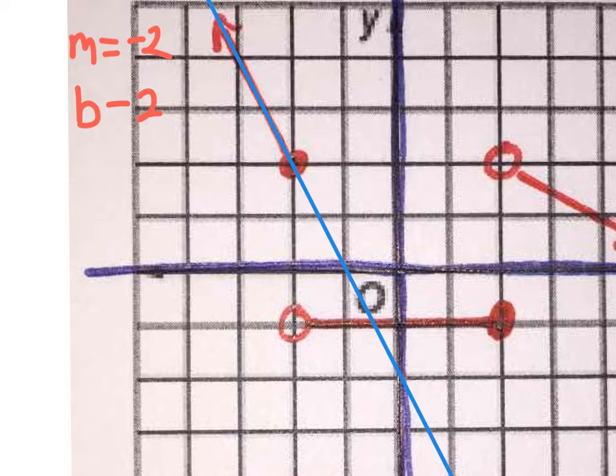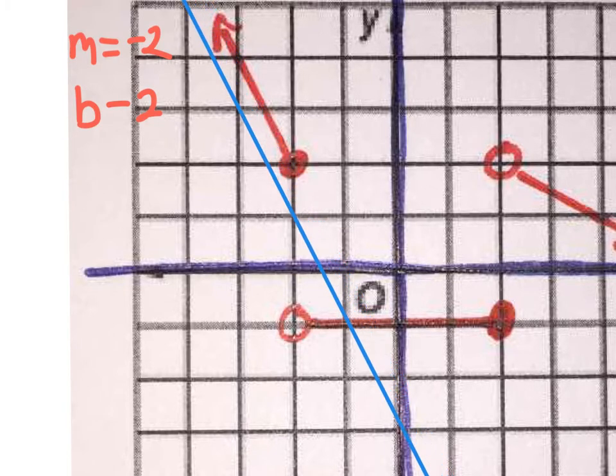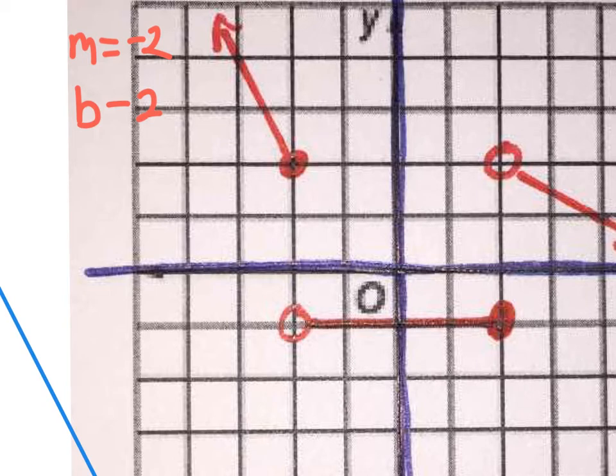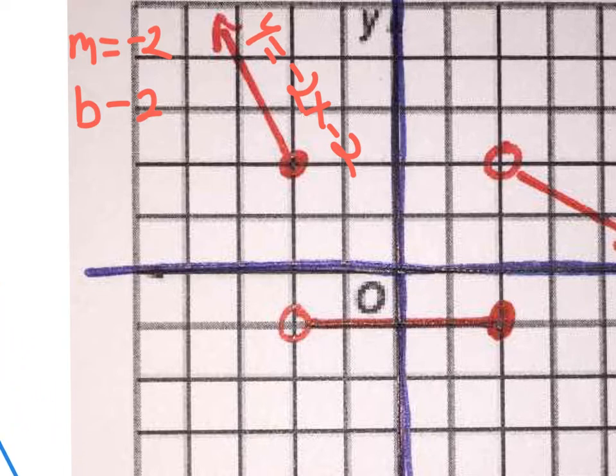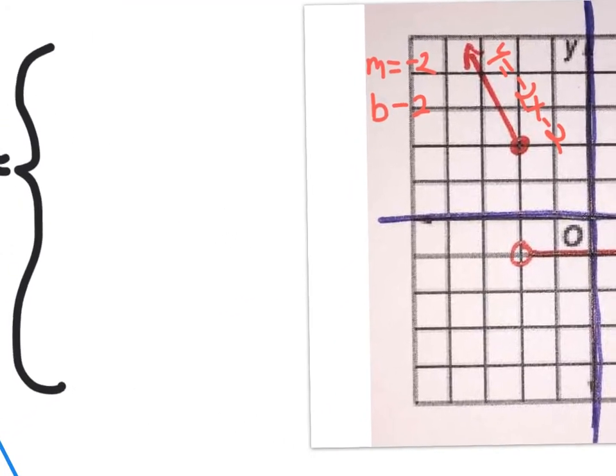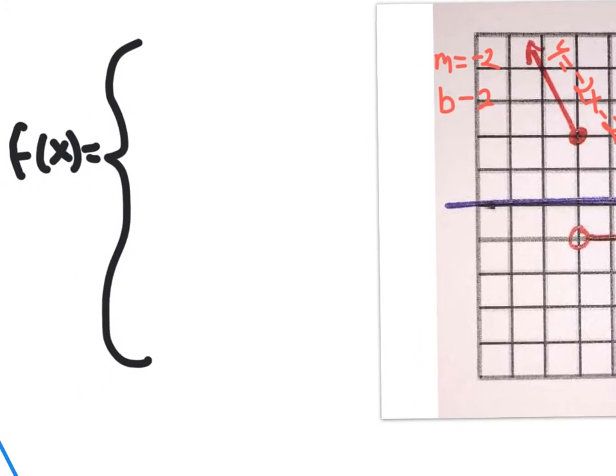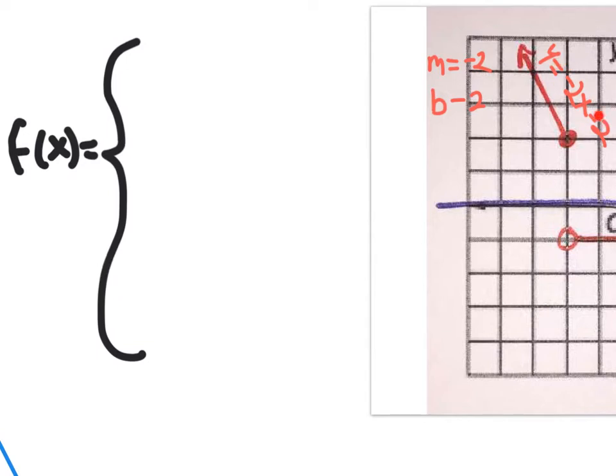So once you know your m and your b, now you can write your slope-intercept form equation. I'm just going to move this blue line to the side for now. The equation of this piece is y equals negative 2x minus 2. That's my equation. However, that's the first piece. Let's go back to the piecewise function that we need to write, the f of x. Instead of writing y equals negative 2x minus 2, I'm only going to write the negative 2x minus 2 part, because f of x is like saying y equals. It's not the whole line, it's only the piece of the line, so I need to write down the condition.